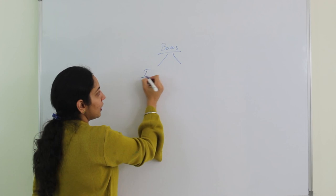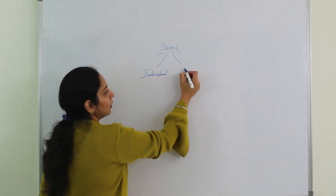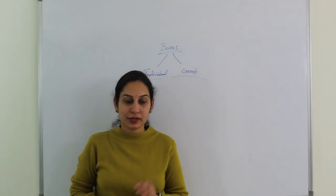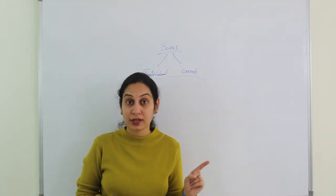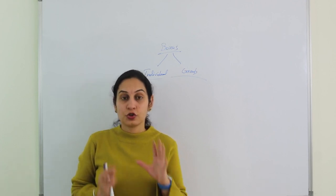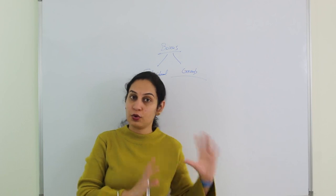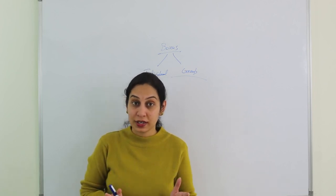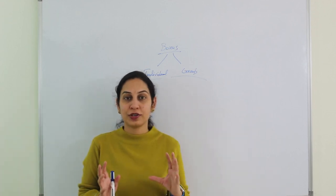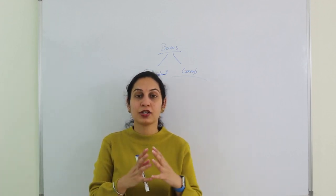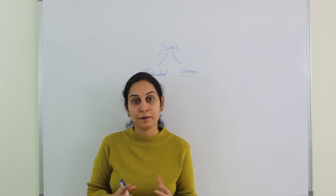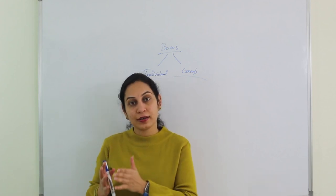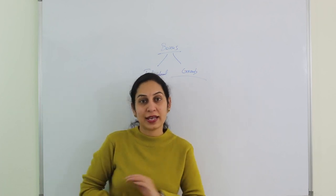Bonus can be of two types: individual and group. Individual bonus means if a certain employee saves time, he gets the benefit individually. However, a company doesn't work in isolation — employees work as a team. In a group bonus scheme, when the whole team achieves a certain target in terms of time saved, they all receive a bonus. Both individual and group bonus schemes have their own advantages and disadvantages.